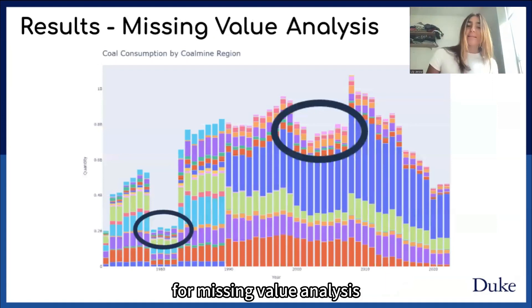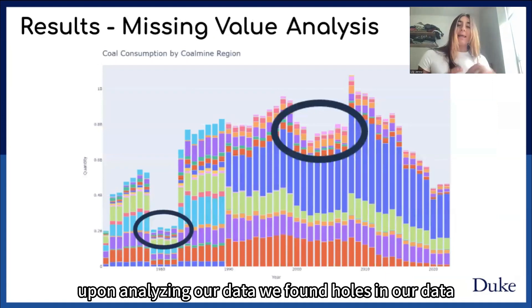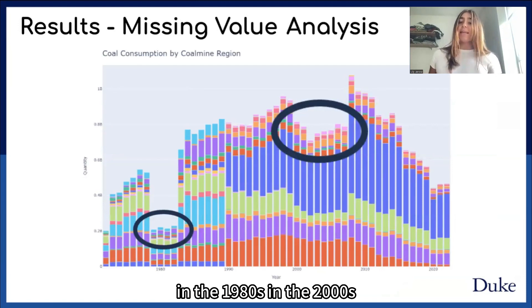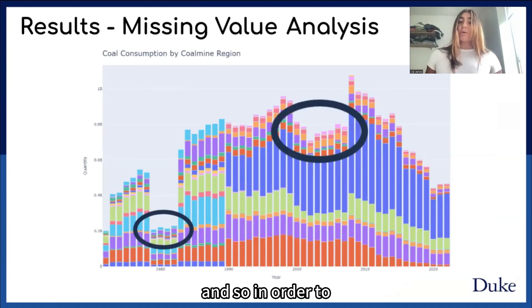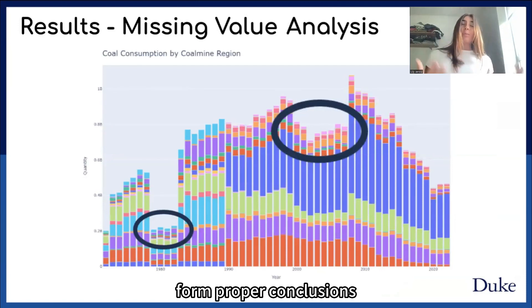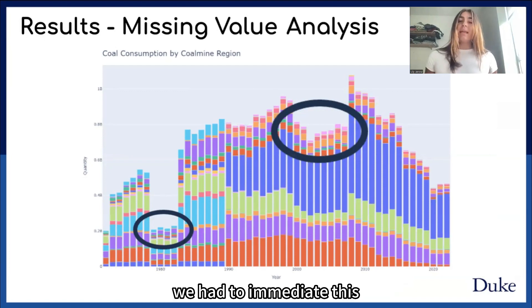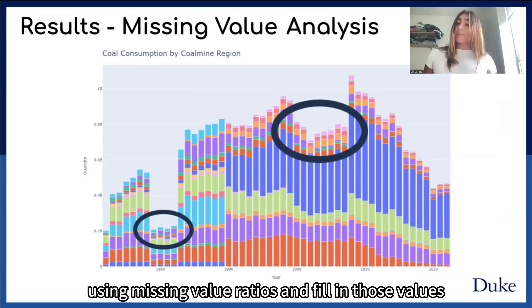For missing value analysis, upon analyzing our data, we found holes in our data in the 1980s and the 2000s, and so in order to form proper conclusions and generate our machine learning model, we had to remediate this using missing value ratios and fill in those values.